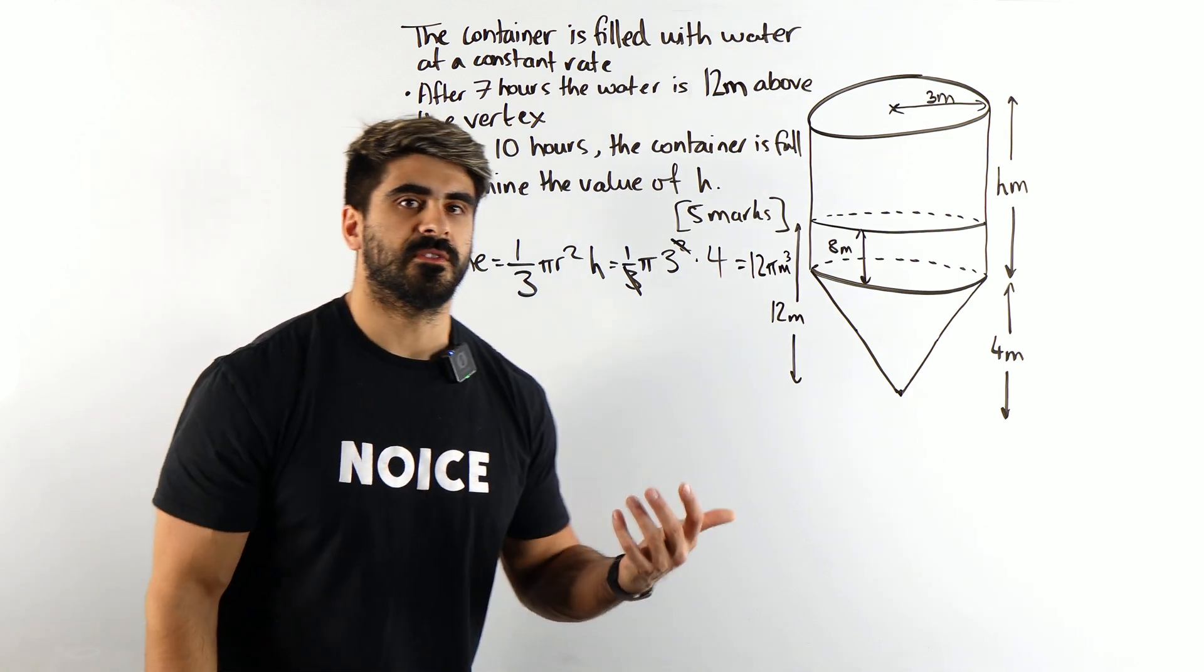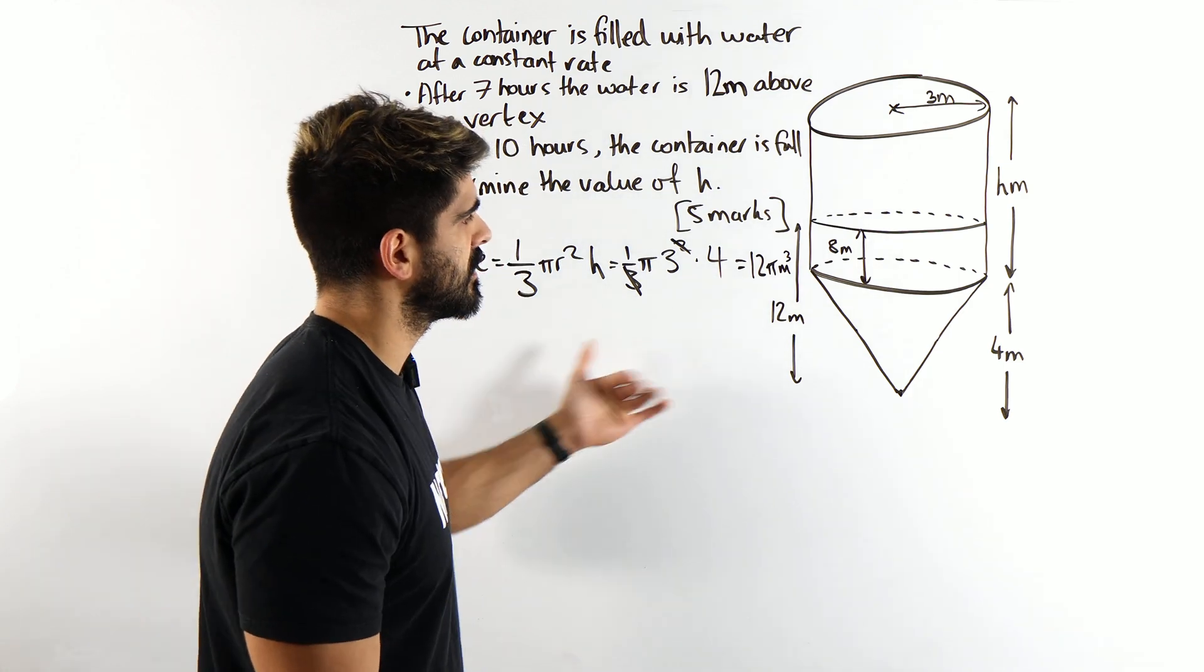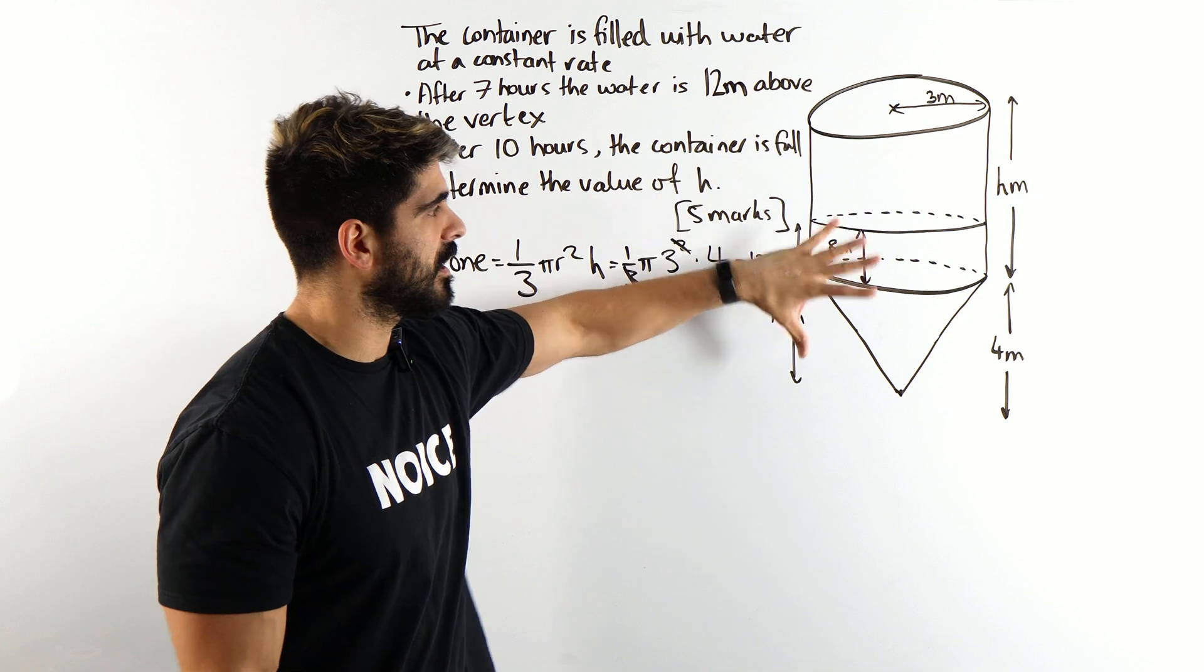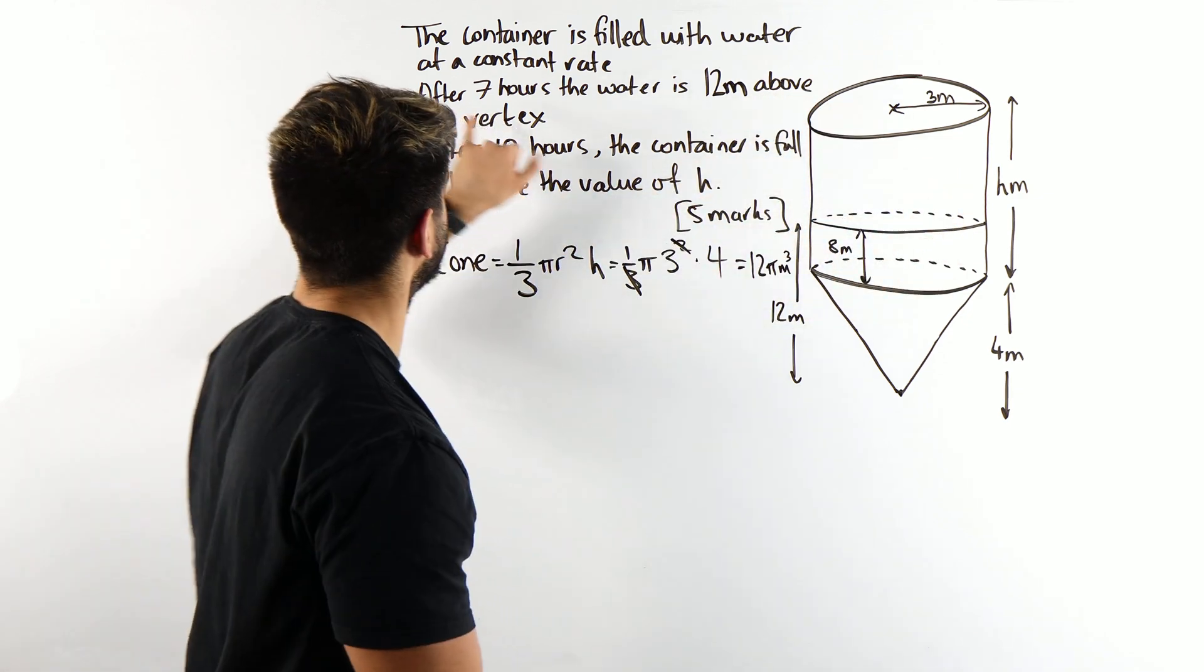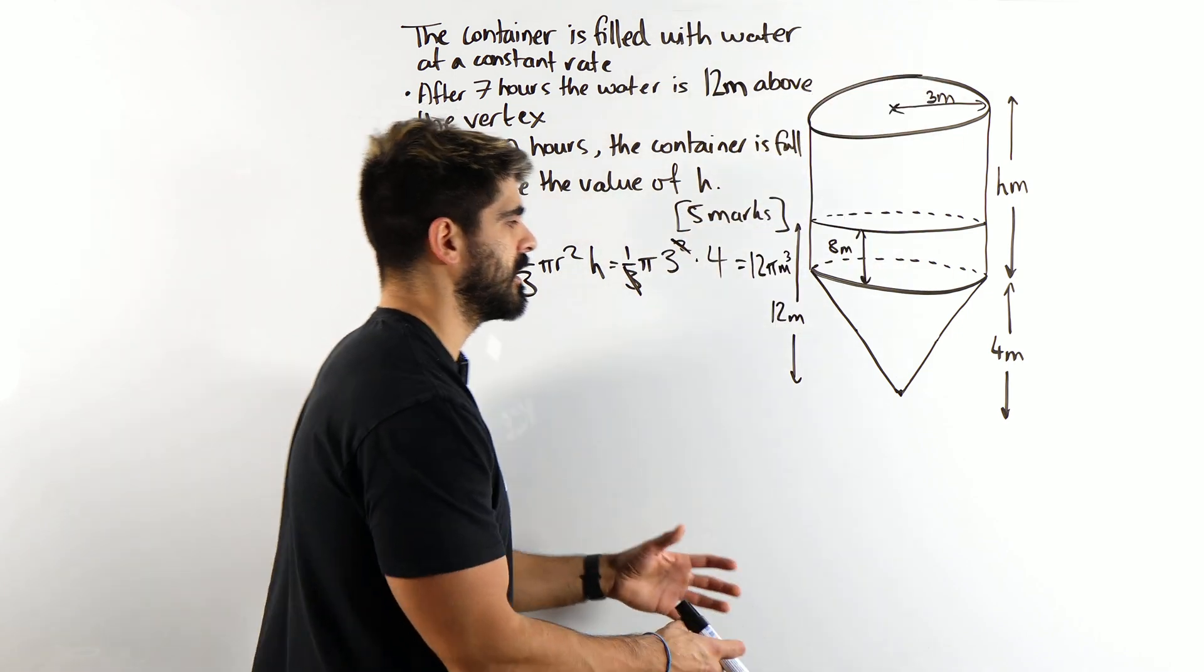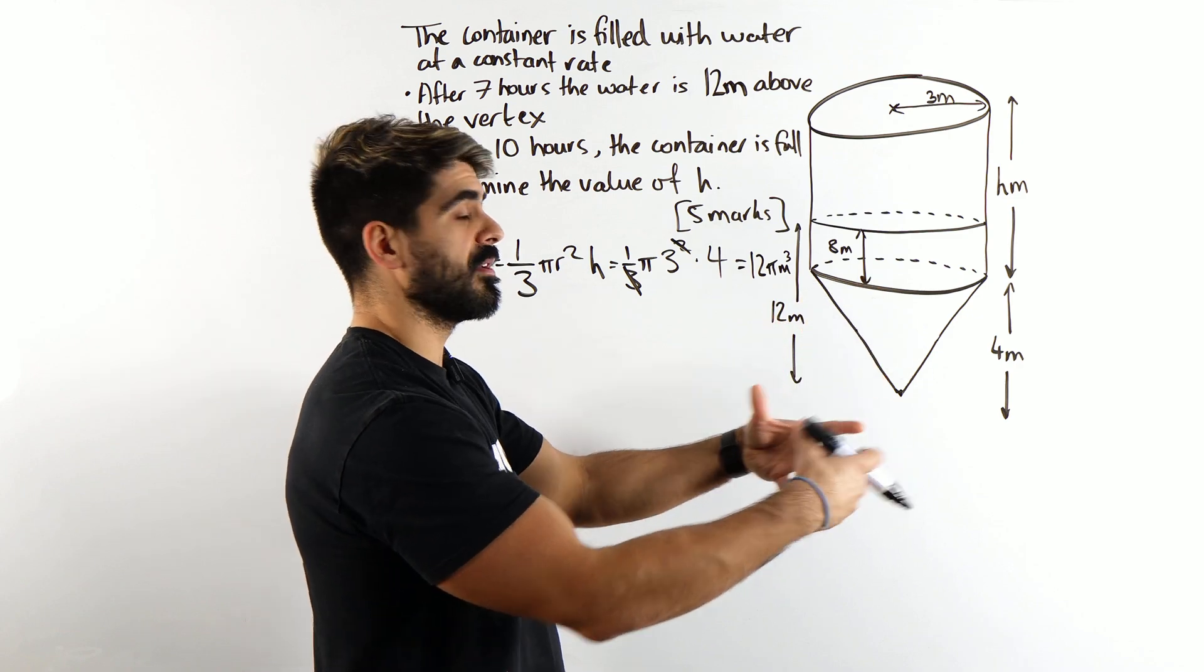Now why are we finding the volume? We're trying to find the rate at which water is filling up. Because the rate in which we fill up this cone is going to determine what h is, because we have the time it takes to fill up the whole thing. When we talk about filling something up, we're talking about the volume.